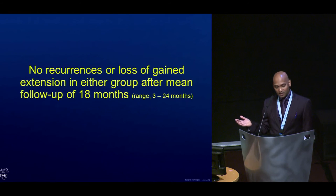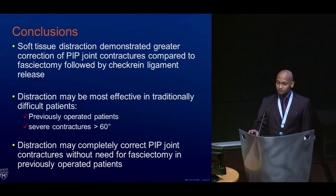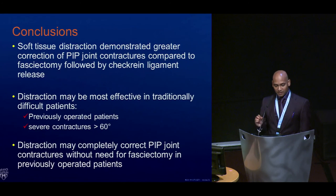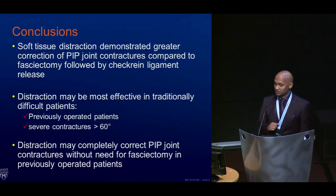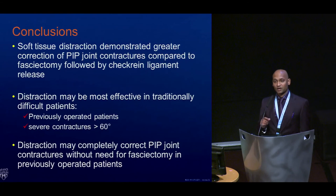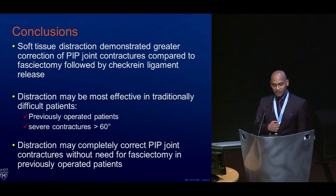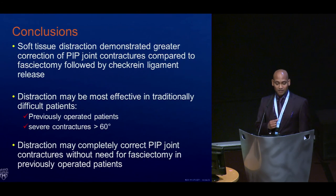In both cohorts, there was no significant recurrence or loss of extension gain after 18 months. The conclusions from this retrospective review are that the digit widget is an alternative adjunct tool for severe contractures. For lesser degrees, needle aponeurotomies or collagenase are likely better options, but for contractures beyond 60 degrees or approaching 90 degrees, this is a very good alternative modality.